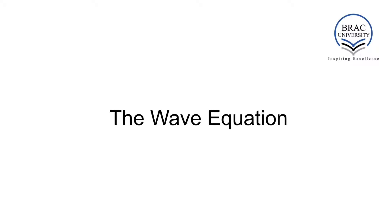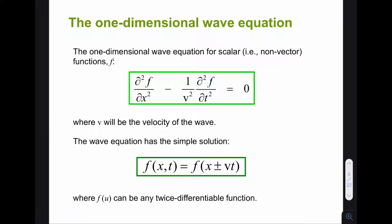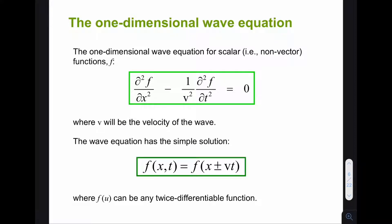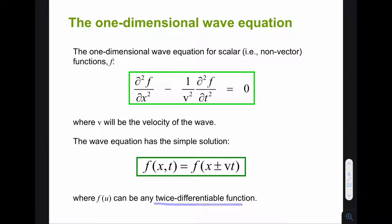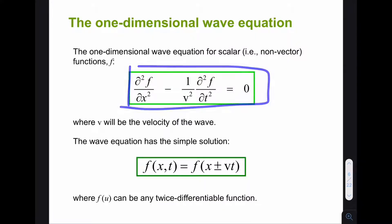Now that we know what a wave is, let's turn our concentration to the wave equation. We will first consider the one-dimensional wave equation. For a scalar function f, the one-dimensional wave equation is given, where the term v is the velocity of this wave. This wave equation has the simple solution f(x ± vt), where the minus sign indicates a forward propagating wave and the plus sign indicates a backward propagating wave. Note that the function f needs to be twice differentiable, otherwise this equation will not be valid.